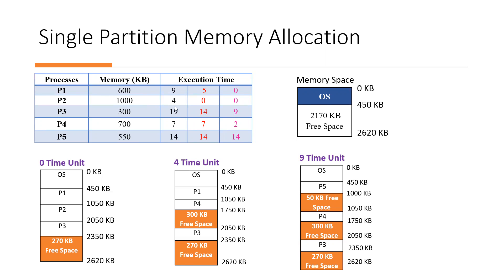This will not be the execution time directly — this will only be given when we allocate memory. What is shown here is the remaining time. So this is actually our execution time, and this other column is our remaining time.